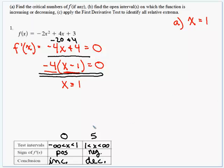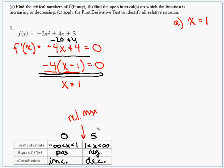At x equals 1, the function is increasing on the left and decreasing on the right, so there's a hill there. That means the critical number is at the top of the hill — it's a relative max. The critical number is just the x-coordinate, so we plug x equals 1 into the original function to get the y-coordinate. f of 1 gives us 5, so the relative max is at (1, 5).